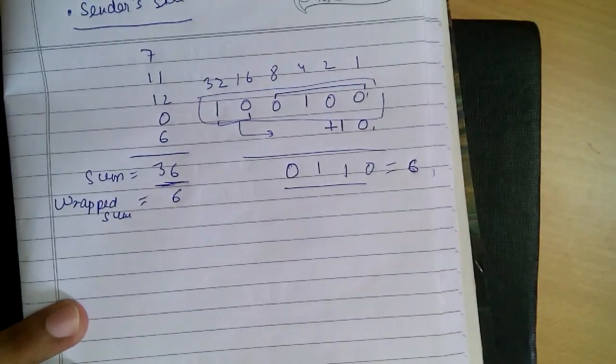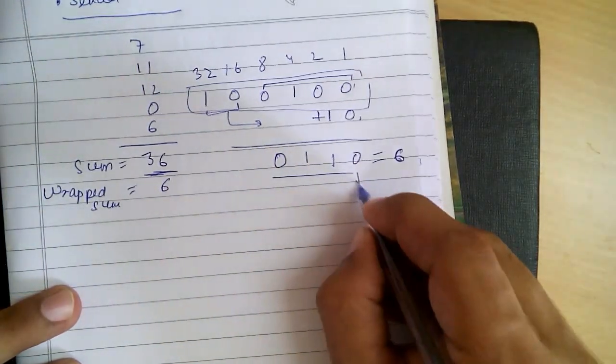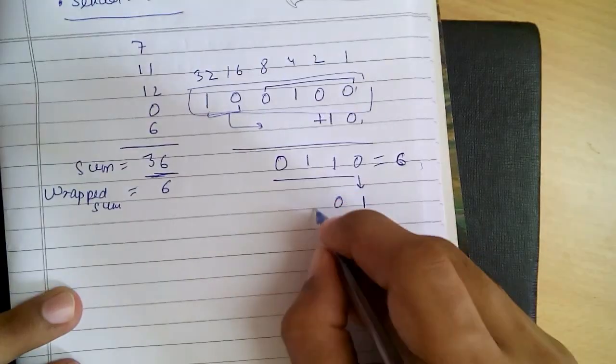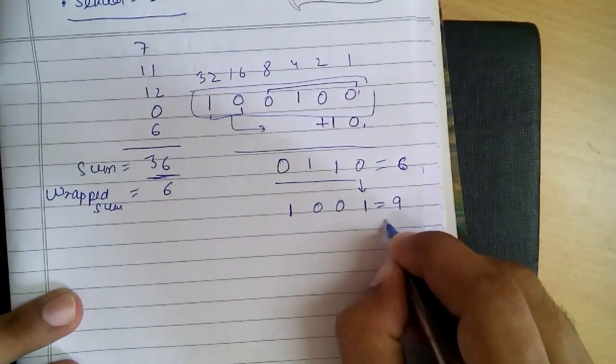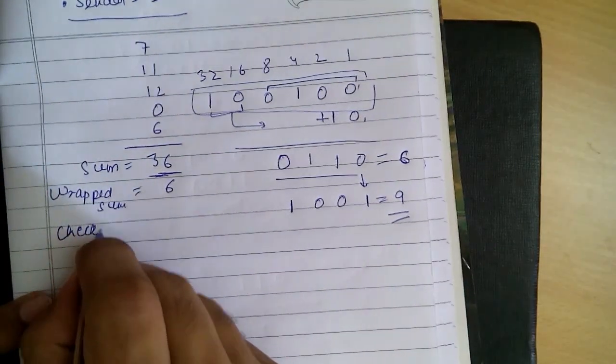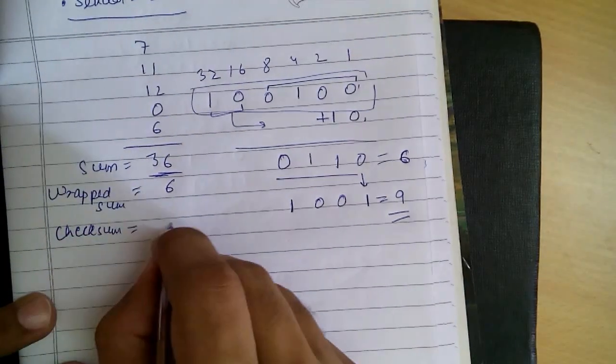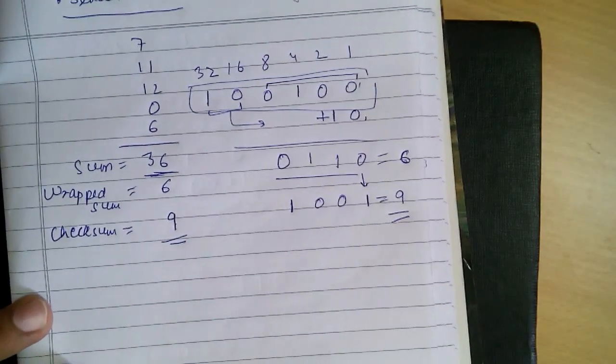Now to get our checksum, we need to complement this. Complementing 0110 becomes 1001, which is 9. So our checksum is 9.